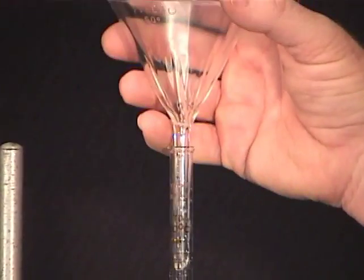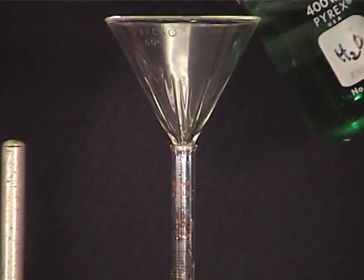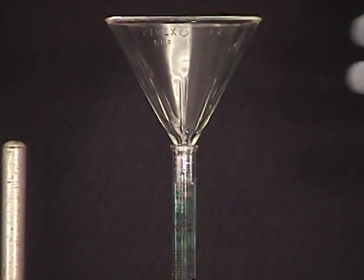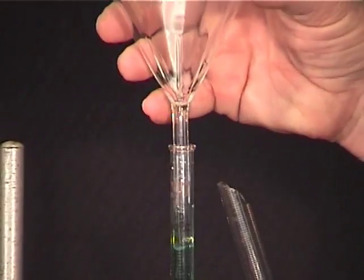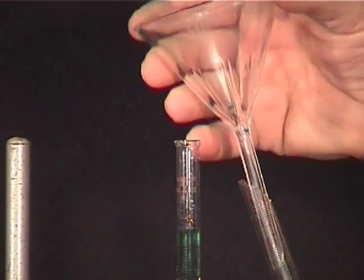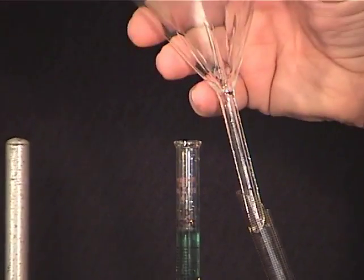To do this, use a funnel to add 5 milliliters of the reagent to the burette. In removing the funnel, be sure to clear the neck of the burette before twisting the funnel downward. If you don't, the stem of the funnel may break the glass at the top of the tube.